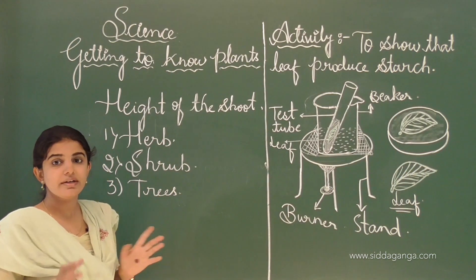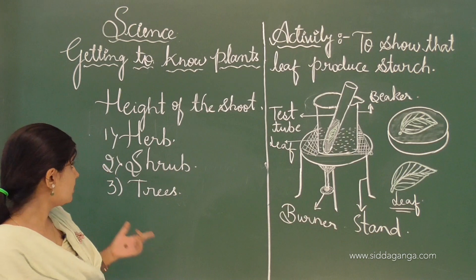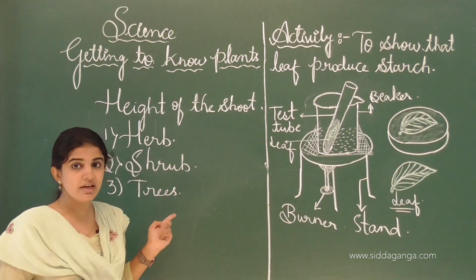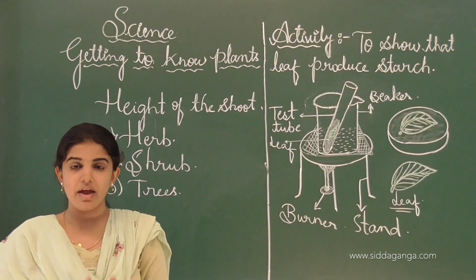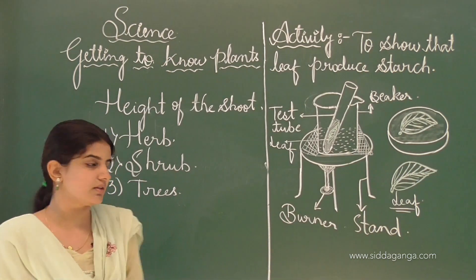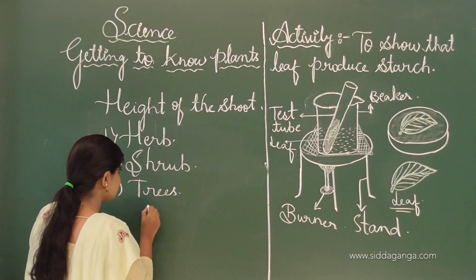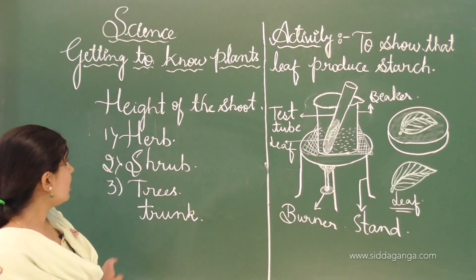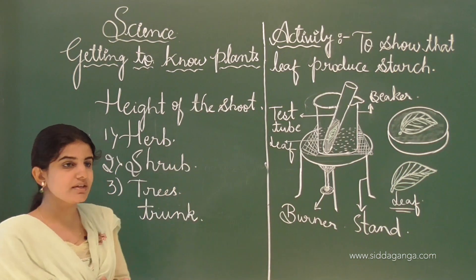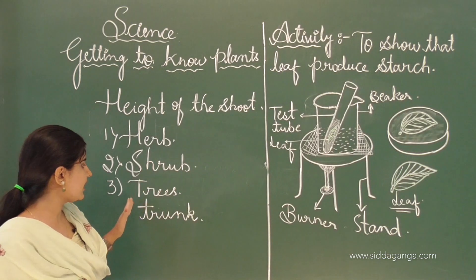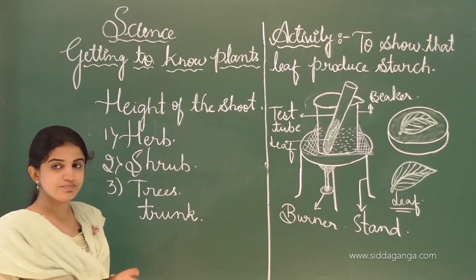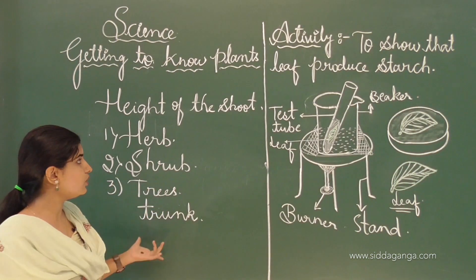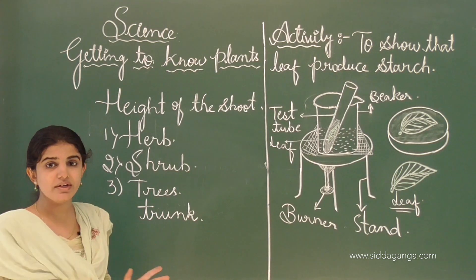Next one is the trees. Based on the stem or the shoot system, plants can be categorized into three types: herbs, shrubs, and trees. Trees have a larger woody stem, and this woody stem is called the trunk. Examples of trees are mango tree and coconut tree. So on the basis of the shoot system, plants can be categorized into three parts: herbs, shrubs, and trees.